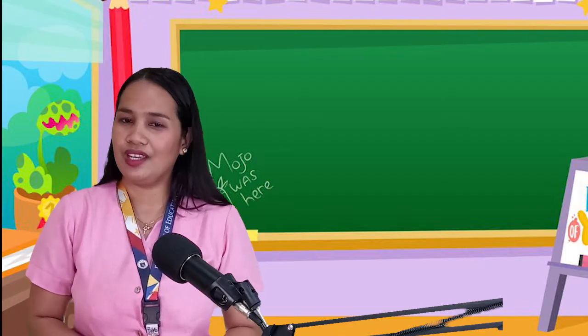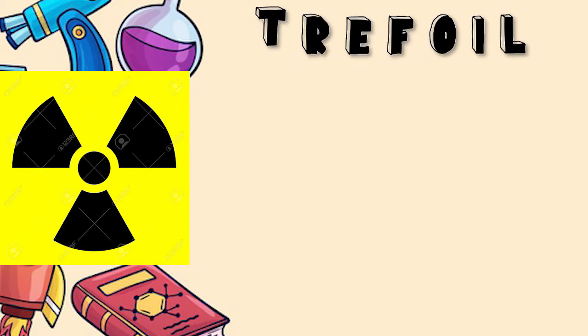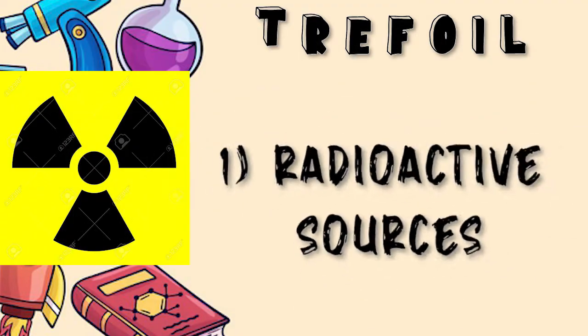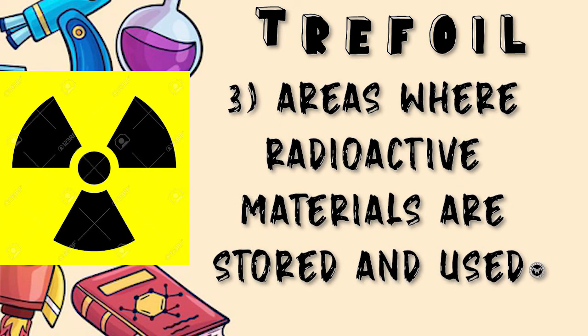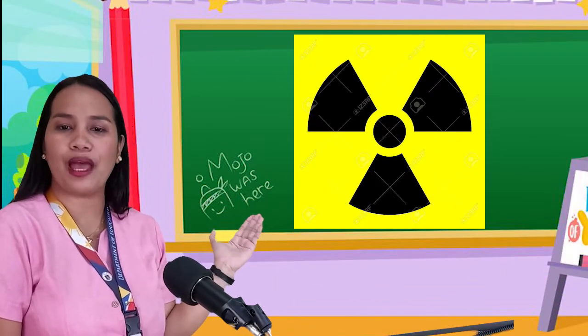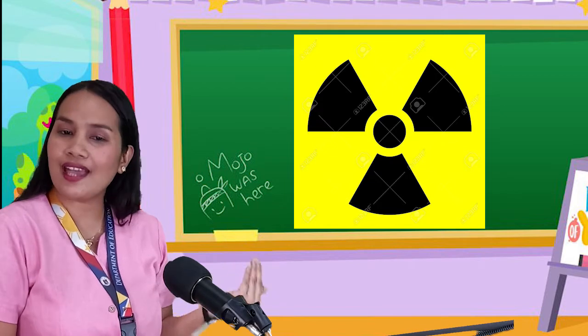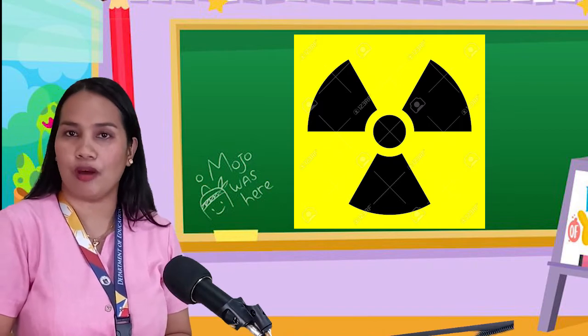A few minutes later. Alright! Very good! You've done it well! Are you familiar with this picture? Write all your inferences about the picture. The symbol shown is the trefoil, also known as the international sign used to indicate radioactive sources, containers for radioactive materials, and areas where radioactive materials are stored and used. The presence of this symbol — a magenta or black propeller on a yellow background — denotes the need for caution to avoid contamination or undue exposure to atomic radiation.